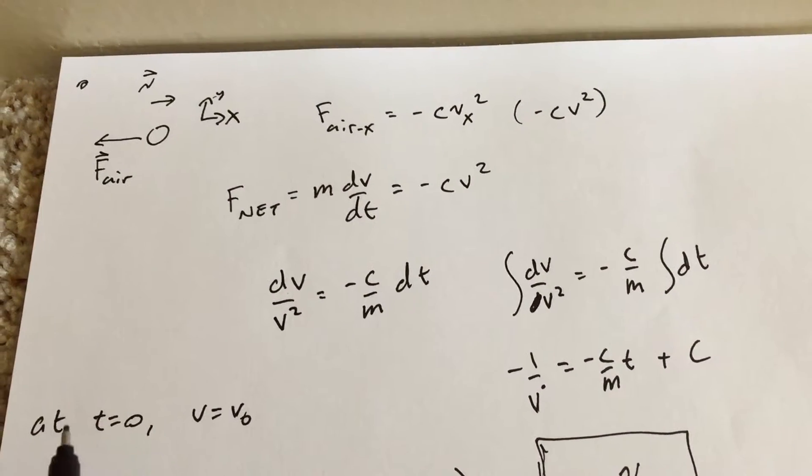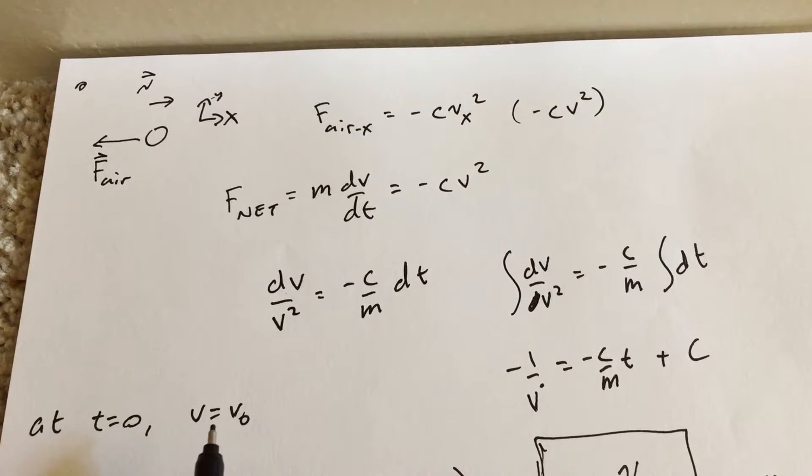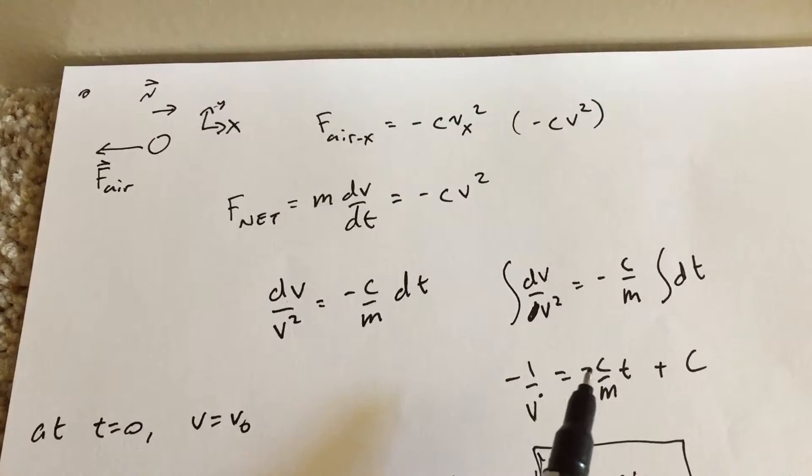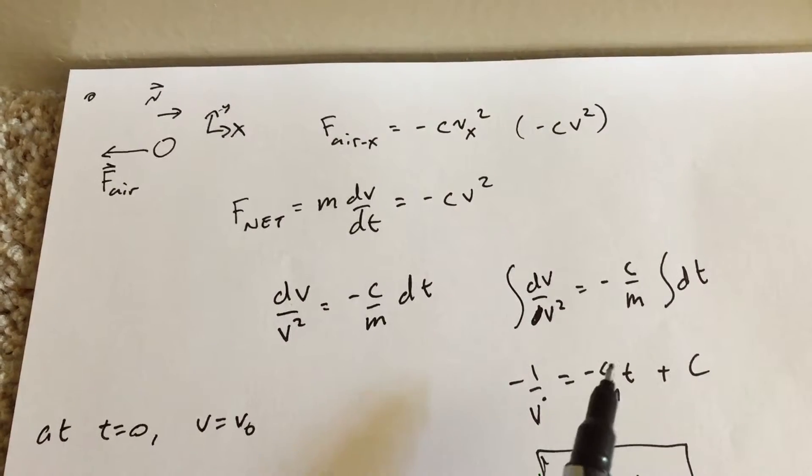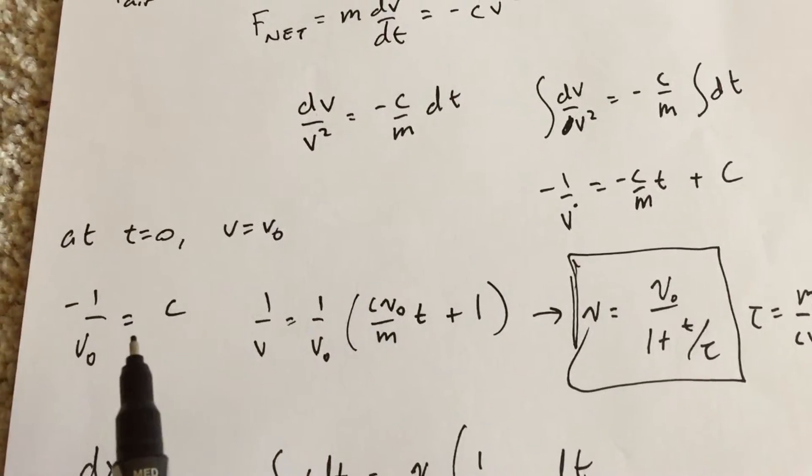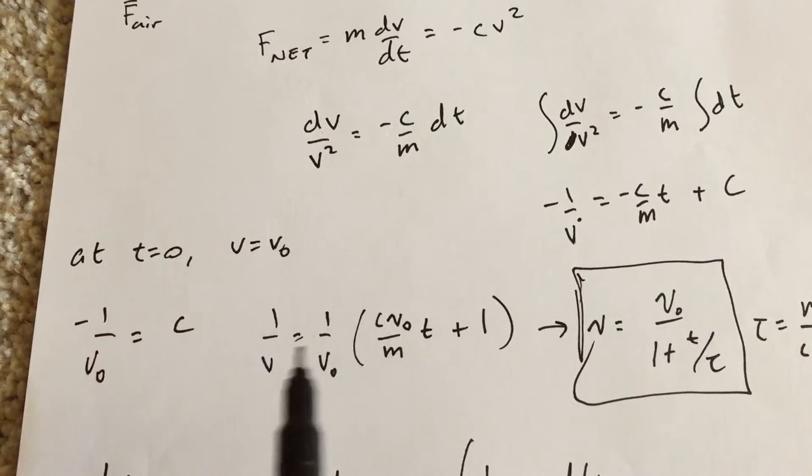So now, how do I find that constant? If at time t equals 0, the velocity is v₀, then I can put in v₀ and t equals 0, and I get this term goes away, and I get c equals negative 1 over v₀. Right here. So now I know c, I can plug that in over here.